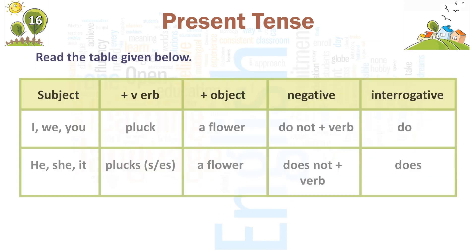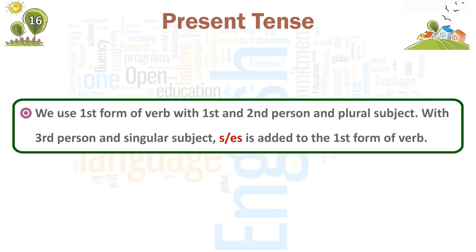From the table: Affirmative — Rani plucks a flower (subject + verb + object). Negative — Rani does not pluck a flower (do not/does not + verb). For he, she, it: add s or es to the verb. We use the first form of the verb with first and second person and plural subjects. With third person singular subjects, s or es is added to the first form of the verb.